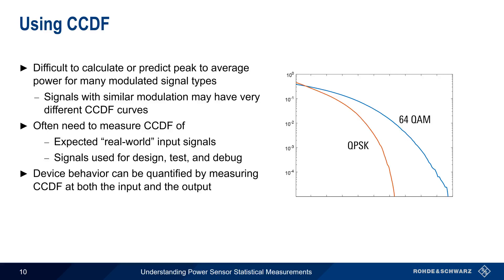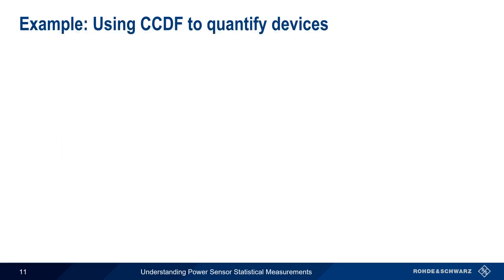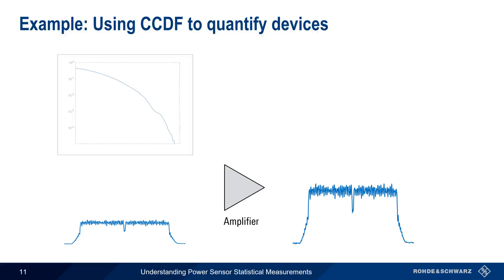Let's look at an example of this. In this example, our device under test is a simple amplifier. Ideally, an amplifier would increase the amplitude of a signal without distortion. If the signal is amplified without distortion, the CCDF curves will be approximately the same for both the original signal and the amplified signal.